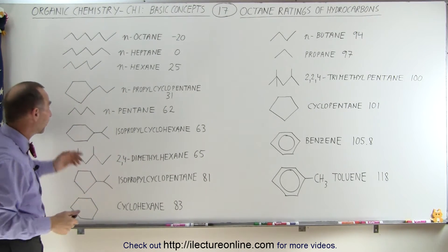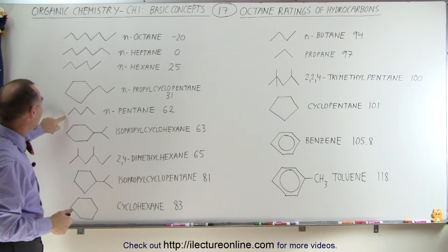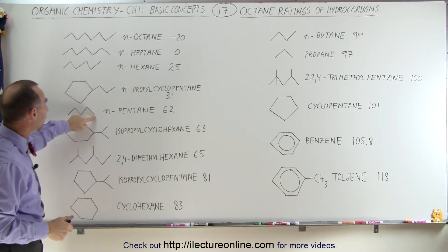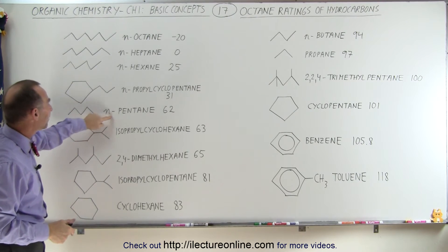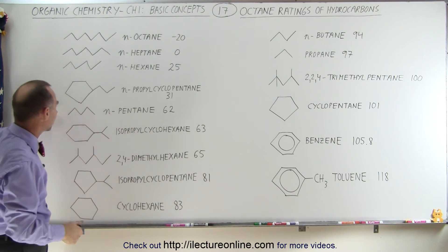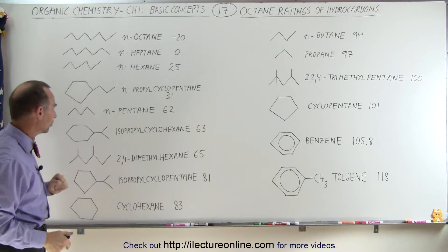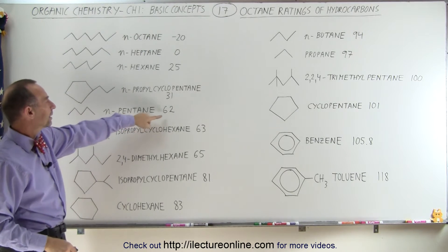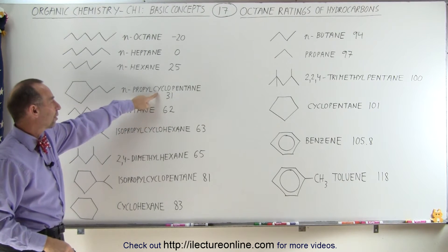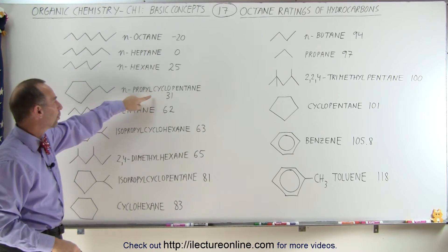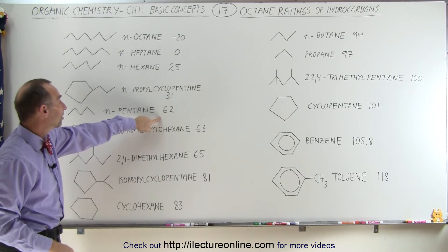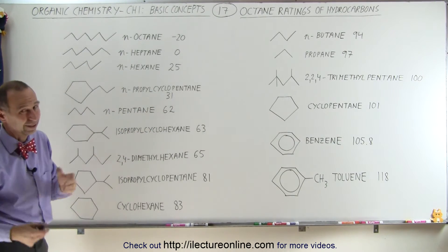The next one again is a fairly simple one. We have one, two, three, four, five carbons, so we call it N-pentane because it's a linear structure. Notice that the octane levels jumped from 31 for the N-propyl cyclopentane to 62 for N-pentane, still probably not good enough for gasoline.